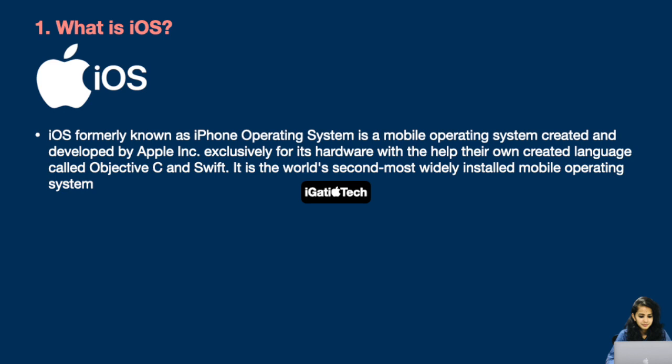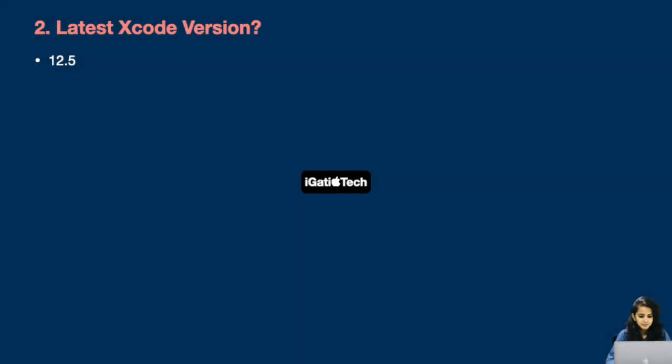This is a question I have been asked in one of the interviews. iOS, formerly known as iPhone Operating System, is a mobile operating system created and developed by Apple Inc. exclusively for its hardware, with the help of their own created languages called Objective-C and Swift. It is the world's second most widely installed mobile operating system.